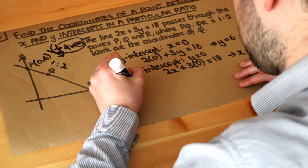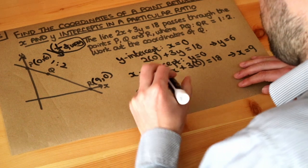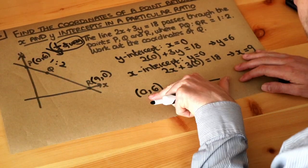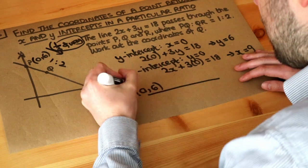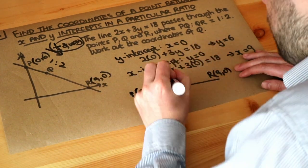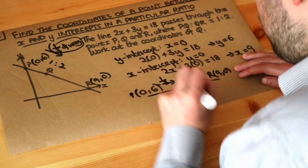Now I sometimes find it helpful to write out this information on almost like a sort of line. So I'm kind of like flattening out this line like this. We've got the 0, 6 here, the P, and we've got the R, which is 9, 0. And we want to go a third of the way along.